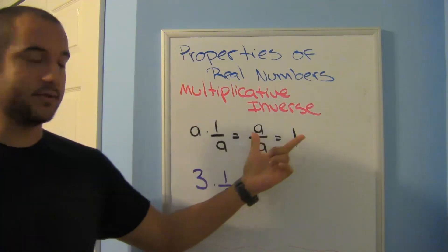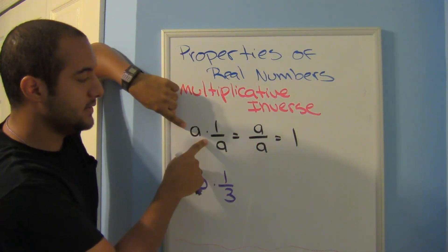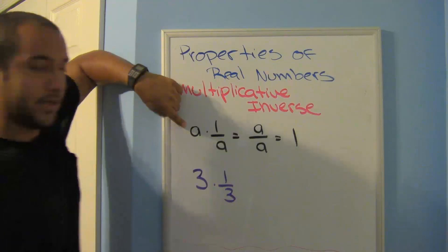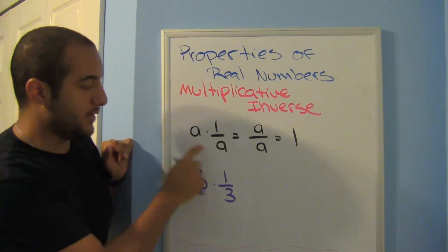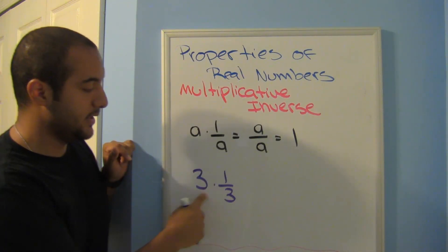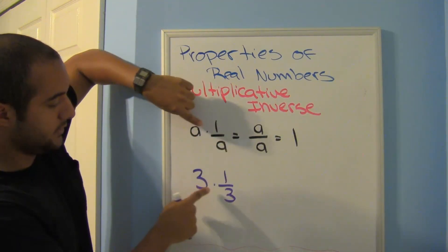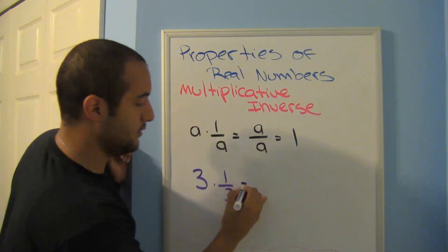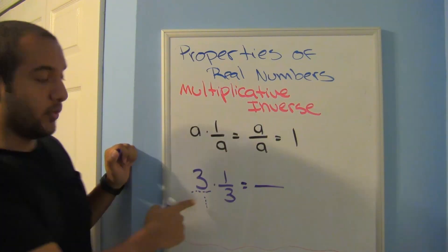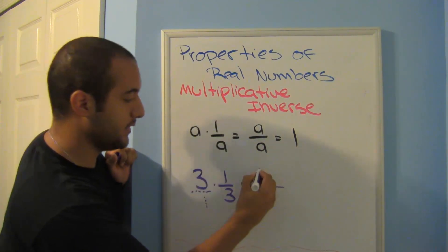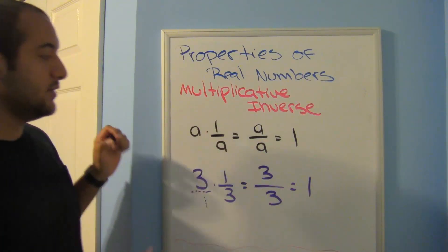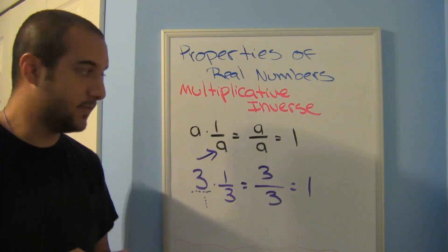The multiplicative inverse says a times one over a equals a over a, which equals one. With numbers: 3 times one-third — multiply it out and you get three over three, which equals one. This is where reciprocals come from.